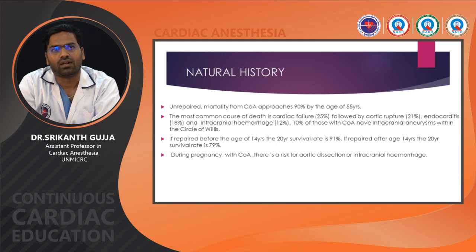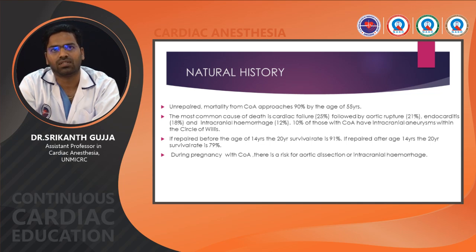Regarding natural history, in unrepaired patients, mortality from coarctation approaches 80% by the age of 55 years. Most common causes of death are cardiac failure at 25%, aortic rupture at 21%, endocarditis at 18%, and intracranial hemorrhage at 12%. 10% of coarctation of aorta patients have intracranial aneurysm. If repaired before age 14, the 20-year survival rate is 91%; if repaired after age 14, it is 79%.